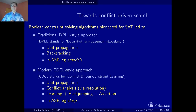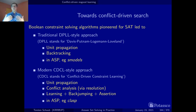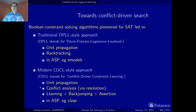Modern ASP solvers, as well as modern SAT solvers and many modern CP solvers, rely on CDCL - conflict-driven constraint learning. In SAT solving as well as ASP solving based on no-goods, the basic inference method is unit propagation. But then this learning-from-mistakes approach kicks in, where conflict resolution, or conflict analysis, happens and is done by the resolution principle.